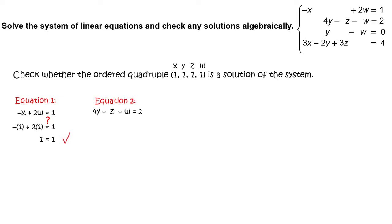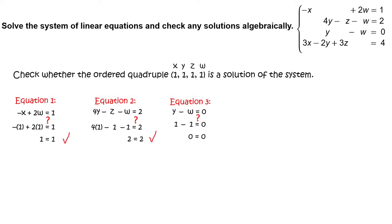Next, write equation 2: 4y minus z minus w equals 2. Substitute 1 for y, 1 for z, and 1 for w, and simplify to get 2 equals 2, which is a true statement, so the ordered quadruple is a solution of equation 2. Write equation 3: y minus w equals 0. Substitute 1 for y and 1 for w, and simplify to get 0 equals 0, which is a true statement, so the ordered quadruple is a solution of equation 3.